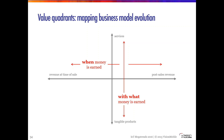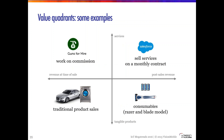For our final trend today, let's look at what kinds of business models we're seeing in the Internet of Things. I want to introduce value quadrants, which can map this evolution in business models. On the horizontal axis we have the 'when' of revenue — you can earn money at the initial sale on the left-hand side, or in a recurring way after the sale over time on the right. On the vertical axis, we have 'with what' — at the bottom, tangible physical products, and at the top, more abstract services.